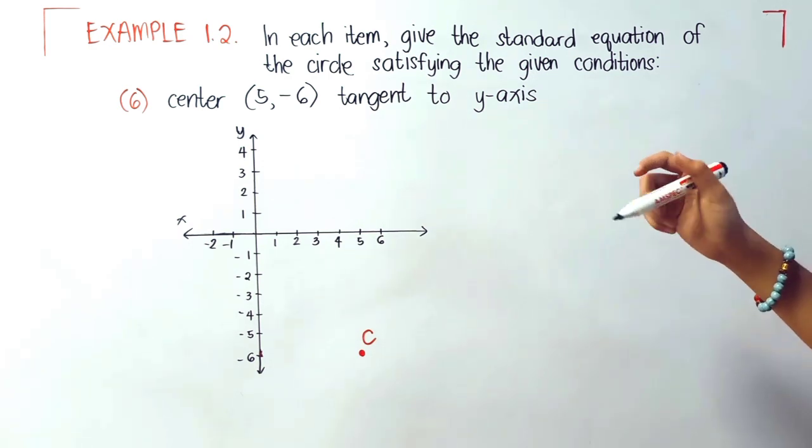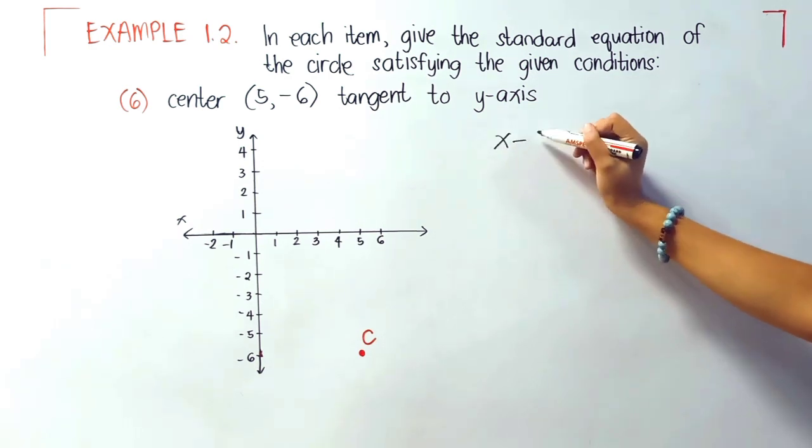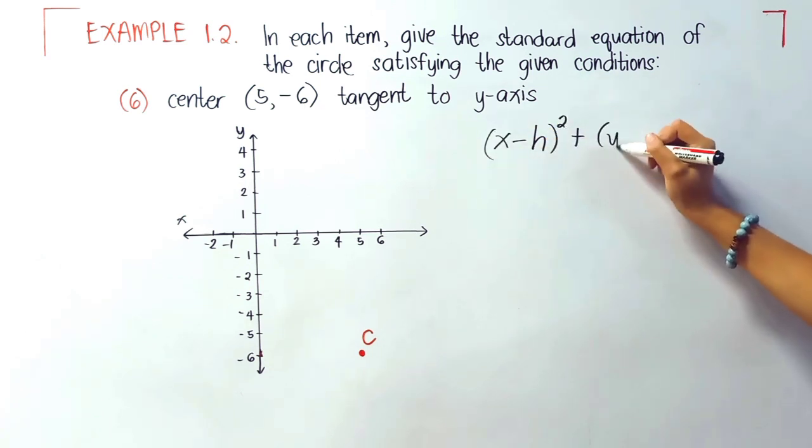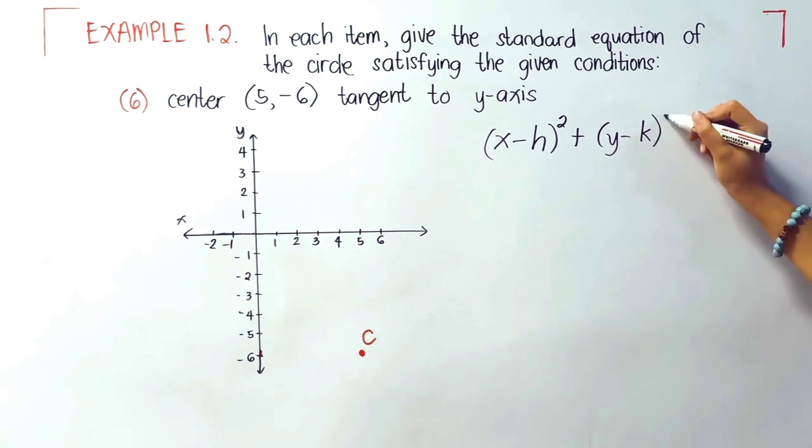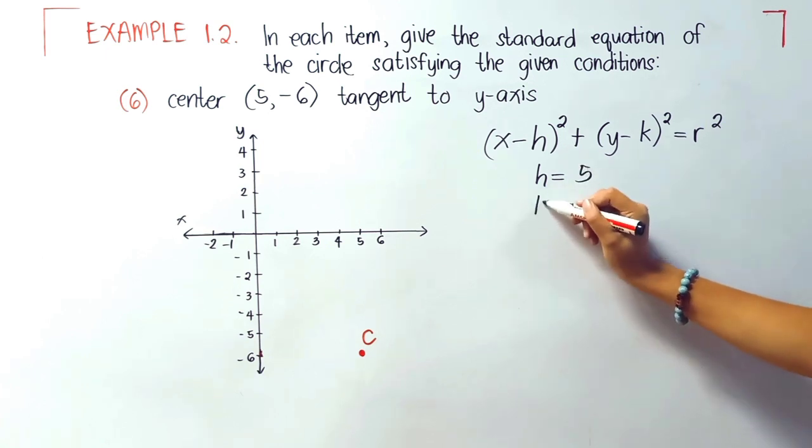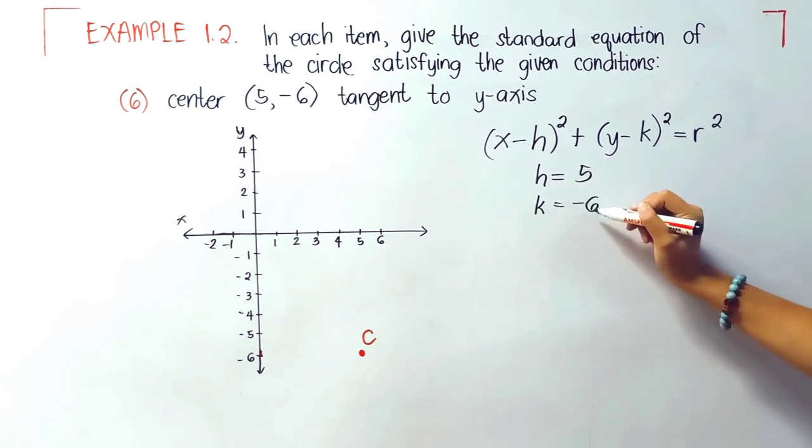Since that is not in the origin, we'll be using x minus h quantity squared plus y minus k quantity squared equals r squared. Our h is 5 and our k is negative 6.